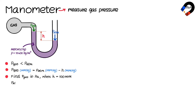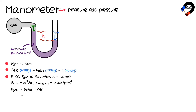and the density of mercury is 13,600 kilograms per cubic meter. The gas pressure equals atmospheric pressure minus ρgh.